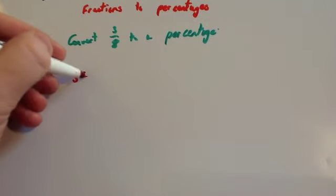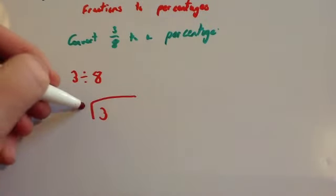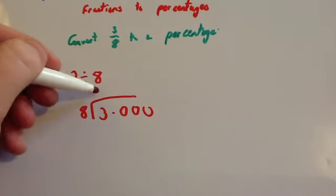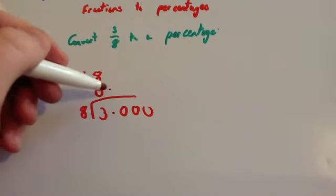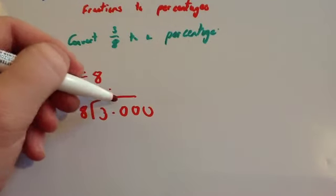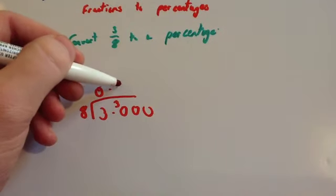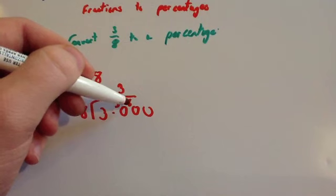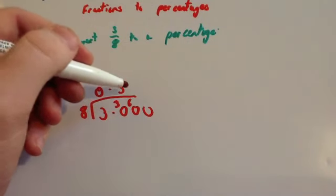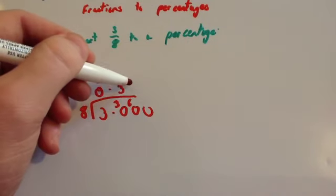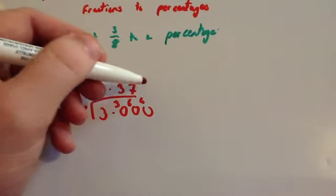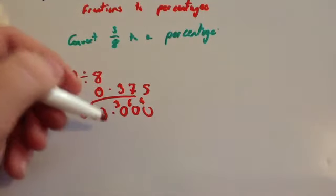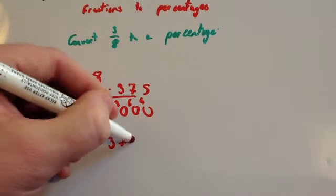We're going to do 3 divided by 8, so use the bus shelter method, 3 divided by 8. Remember to put your decimal point in some zeros. 8 into 3 doesn't go, line up the decimal points. 8 into 3 doesn't go, remainder 3. 8 into 30 goes 3 times, remainder 6. 8 into 60, well 8 times 7 is 56. So 8 into 60 goes 7 times, remainder 4. And 8 into 40 goes 5 times. So you get 0.375. If you times by 100, you get 37.5%. And I think that's probably the easiest way to do that one.